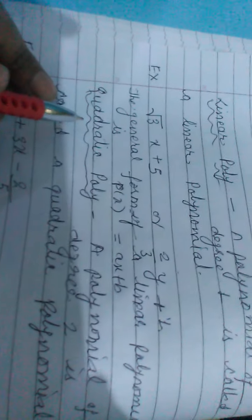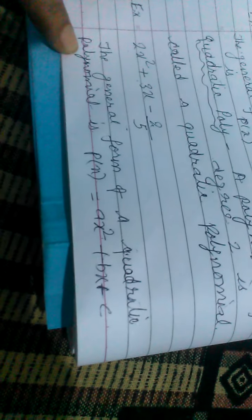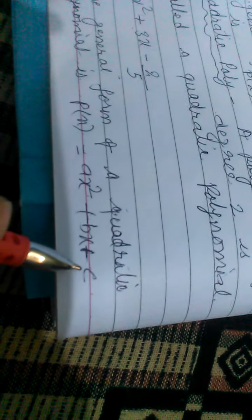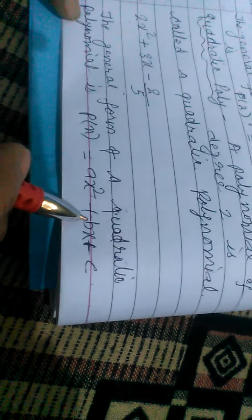Similarly, a quadratic polynomial — a polynomial of degree 2 is called a quadratic polynomial. An example of a quadratic polynomial is 2x² + 3x − 2/5. The general form of a quadratic polynomial is Ax² + Bx + C, where A is the coefficient of x², B is the coefficient of x, and C is the constant term.